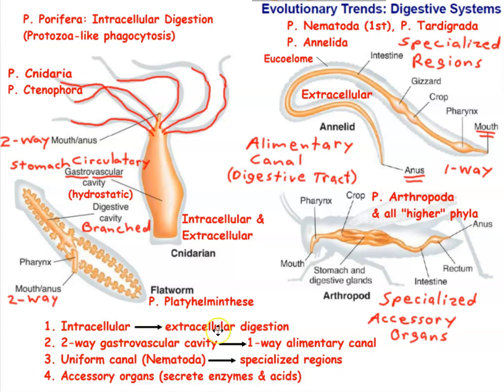The first trend we're looking at is from intracellular digestion to extracellular digestion. The animal kingdom has common ancestry with kingdom Protista, the protozoa. Protozoa capture food and engulf it by phagocytosis, digesting food inside their cells because they're single-celled or colonial organisms. They take in very small food particles and digest them inside the cells — that's intracellular digestion.